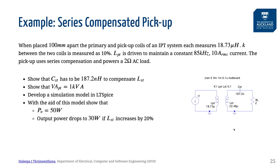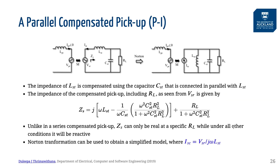Here is an example that you can work through to understand how a series compensated pickup behaves. The pickup coil can also be parallel compensated. We can use the Norton transformation to show that the parallel compensated pickup behaves as a current source. One key difference between a parallel compensated and a series compensated pickup is that the parallel compensated pickup can only be perfectly compensated at a specific RL value. For all other RL values, there will be a residual inductance or capacitance that the primary would see due to the mistuning of the pickup coil.